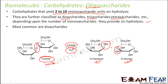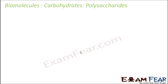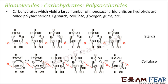Now let us move on to polysaccharides. Polysaccharides, on hydrolysis, yield a large number of monosaccharide units — more than 10. So they are called polysaccharides. Examples would be starch, cellulose, glycogen, and gums.